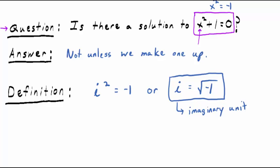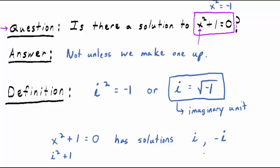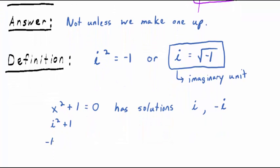Taking the equation x squared plus 1 equals 0, it actually has two solutions: I and negative I. If you put I in for x and square it, I squared by definition is negative 1, and negative 1 plus 1 is equal to 0. So that's one solution. The same thing works if you plug in negative I, because the initial negative squares out anyway.